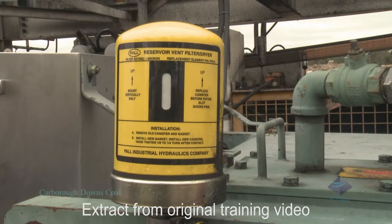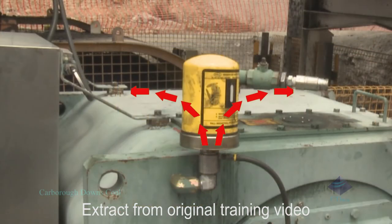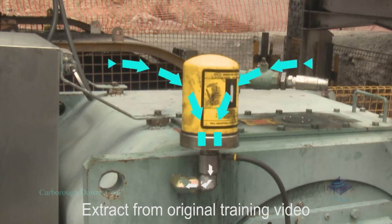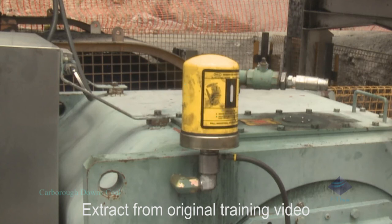A desiccant breather is installed into the housing of the CST to prevent pressure build up within the housing. It allows air to be expelled as the CST heats up and dries the air that is drawn back into the CST as it cools. This protects the CST from moisture contamination.